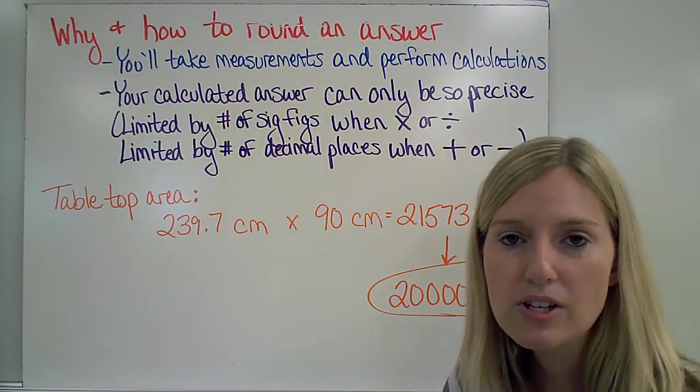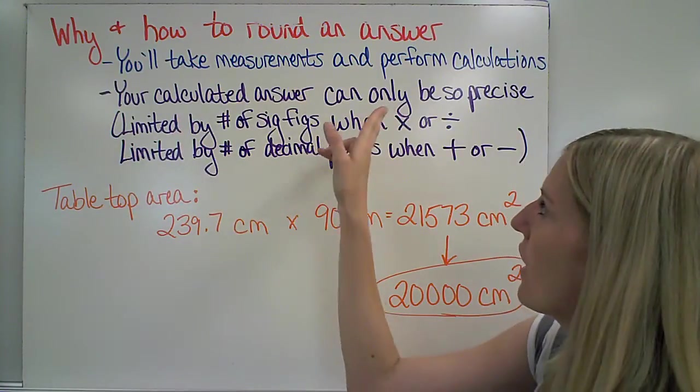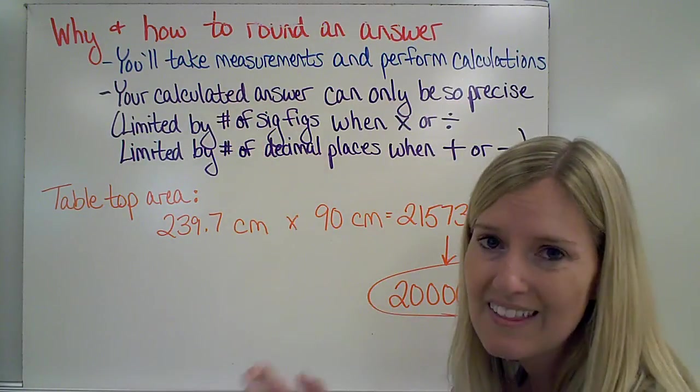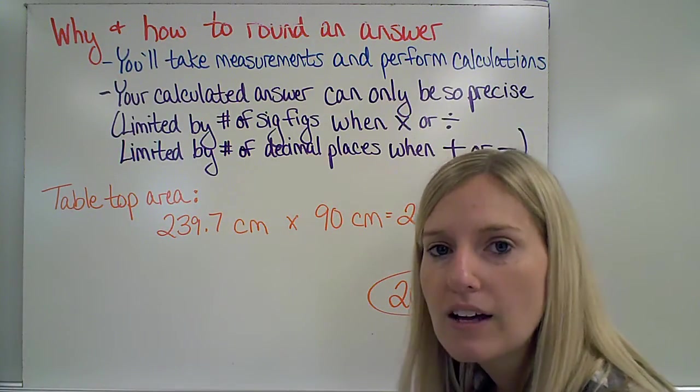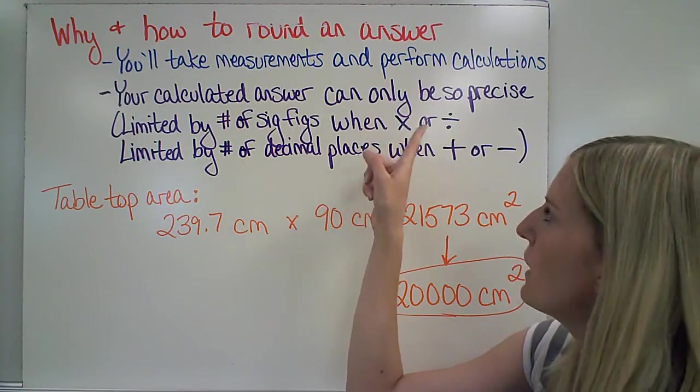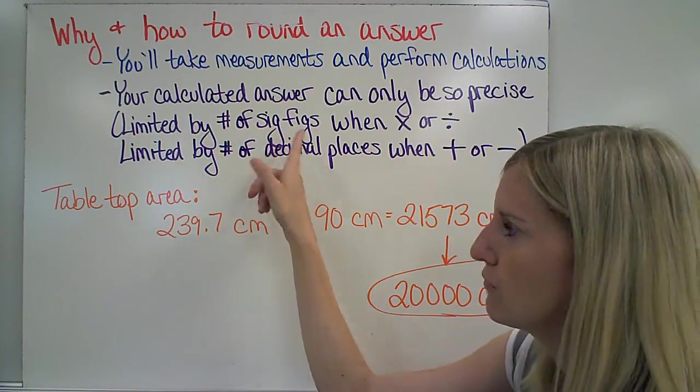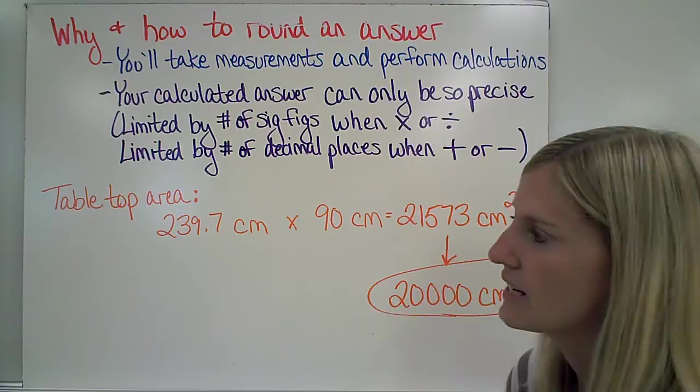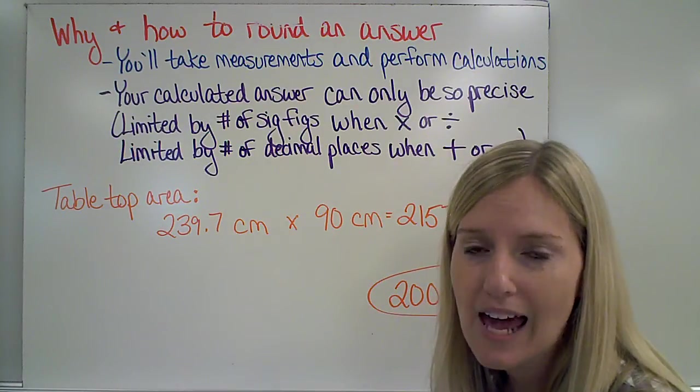To go back to what I was talking about before, about rounding answers. The reason that we would want a rounded answer is because our calculations can only be so precise. When I take a measurement and then do calculations with those measurements, I'm going to get all kinds of long answers in my calculator. But, that answer can only be as precise as my measurements were. If I am multiplying or dividing those numbers, my answer is limited by how many significant figures there were in the original measurements. If I am adding or subtracting, then my answer is limited by how many decimal places the original measurements had.